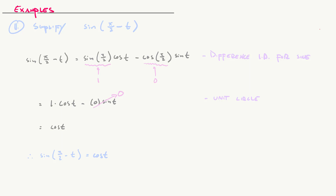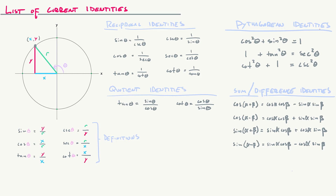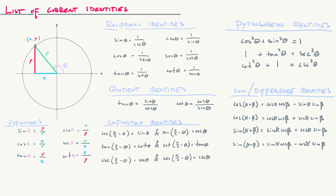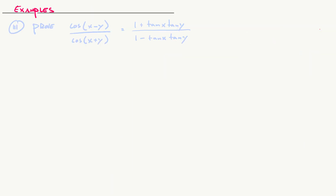You might recognize that as a co-function identity, and you're right. We should add the co-functions to our list of identities: cosine of (pi/2 minus theta) equals sine theta, and sine of (pi/2 minus theta) equals cosine theta, along with the other co-function identities from several videos ago.